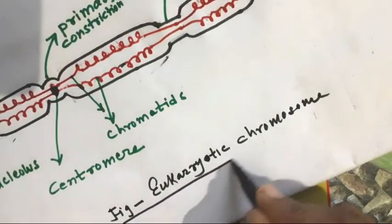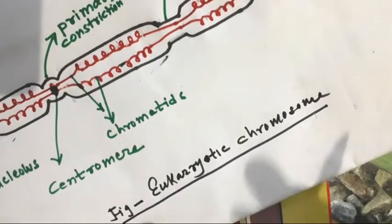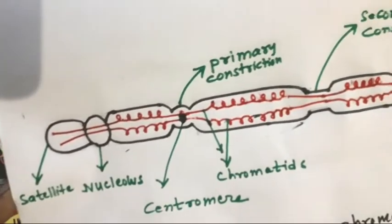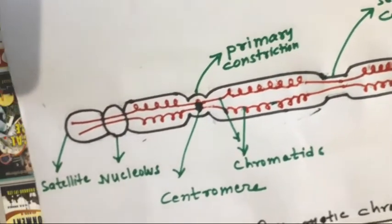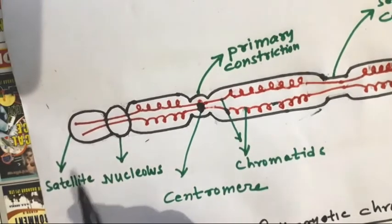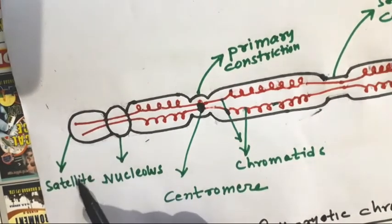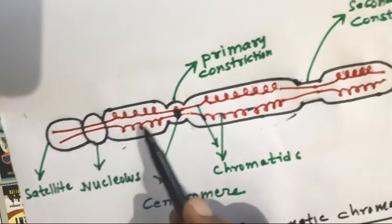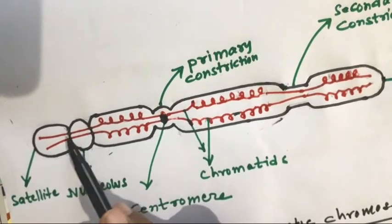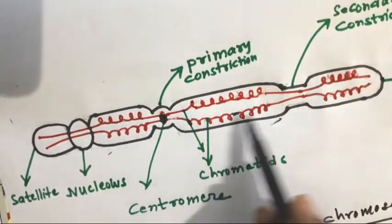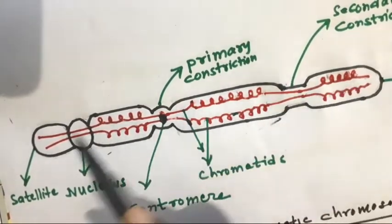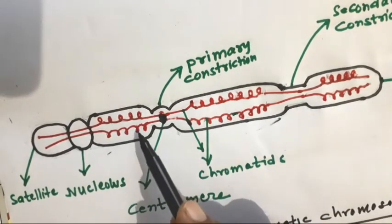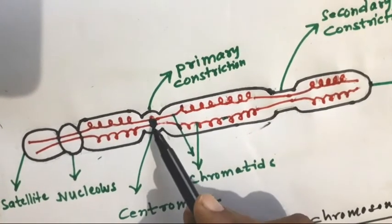In this way, very easily you can draw this. Once again, the structures are: this is the satellite portion, the nucleolus here with the oval separate structure, and the two threads — the two chromatids — passing through it.